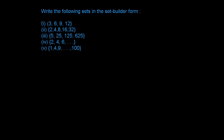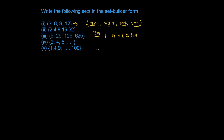Let's write the following listing methods — roster form of sets — into the set-builder form. The first one is {3, 6, 9, 12}. Don't you think this is something like 3×1, 3×2, 3×3, 3×4? So it's something like 3n, where n is 1, 2, 3, and 4.